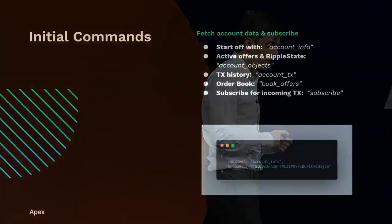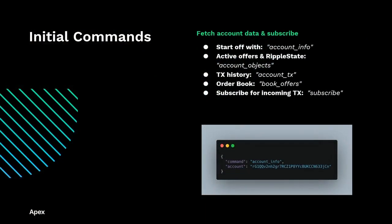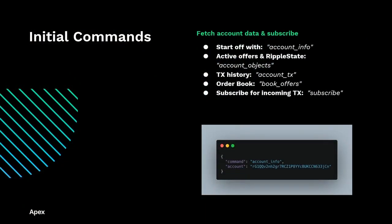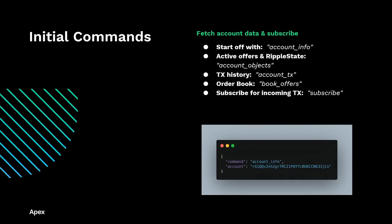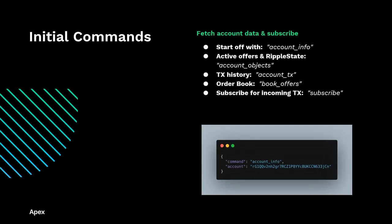So how did I create this app? First, we need a connection to the WebSocket API. We create a new WebSocket in a front-end app and start off with some commands. The first one is account info, which some of you might know. We use that to get the XRP balance of the account, and also to check whether the account actually exists — otherwise it would throw an error.